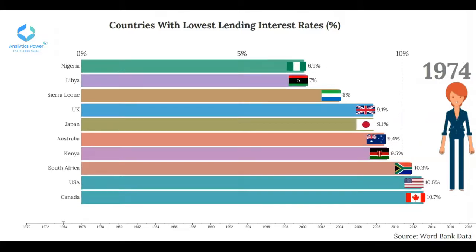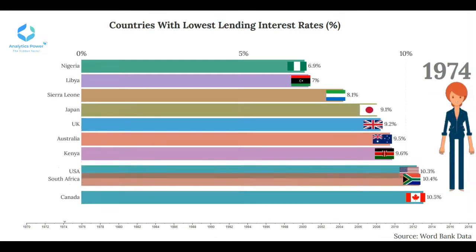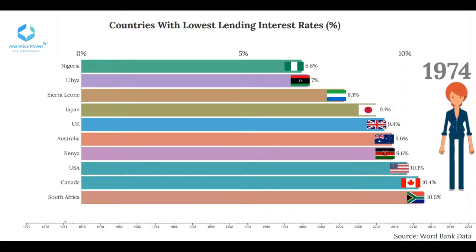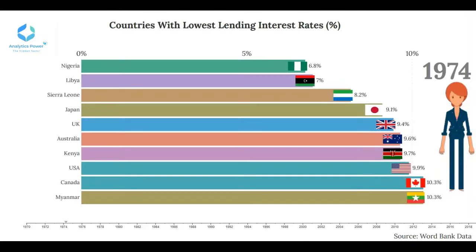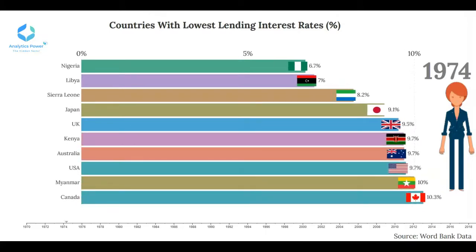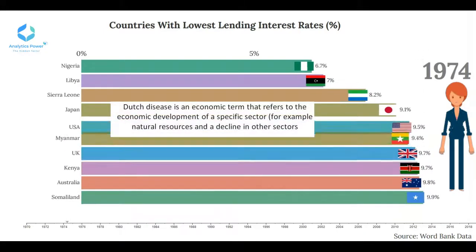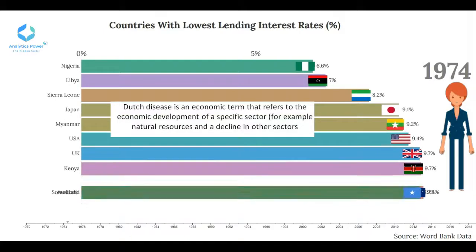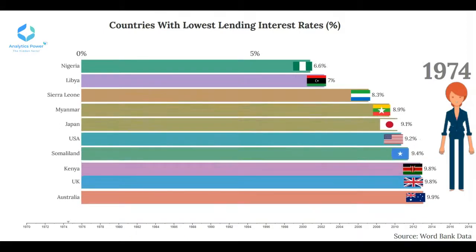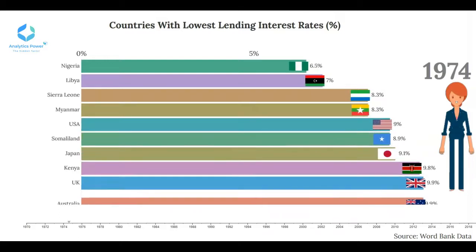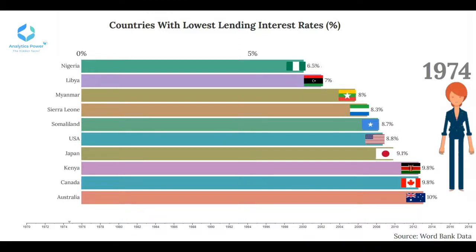The oil price shocks during 1973 to 1974 and in 1979 resulted in a large transfer of wealth to Nigeria. Public expenditure increased greatly, as did the country's access to international capital markets. However, later in the 1970s, evidence of the Dutch disease emerged, and agriculture, the main non-oil tradable sector, declined. Following the collapse of oil prices in 1982 and the rise in real interest rates, Nigeria experienced rising inflation, strict rationing of foreign exchange, and the possibility of debt rescheduling.